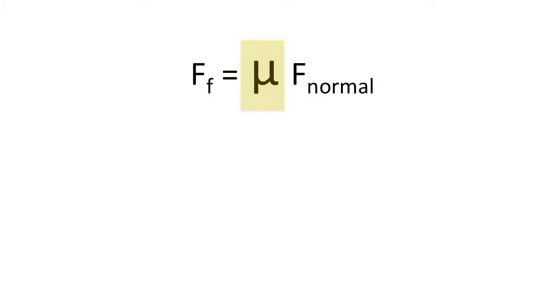To determine the force of friction, it's given by the formula force of friction equals the static coefficient of friction multiplied by the normal force. This symbol is a Greek letter. It's mu and it stands for the static coefficient of friction.